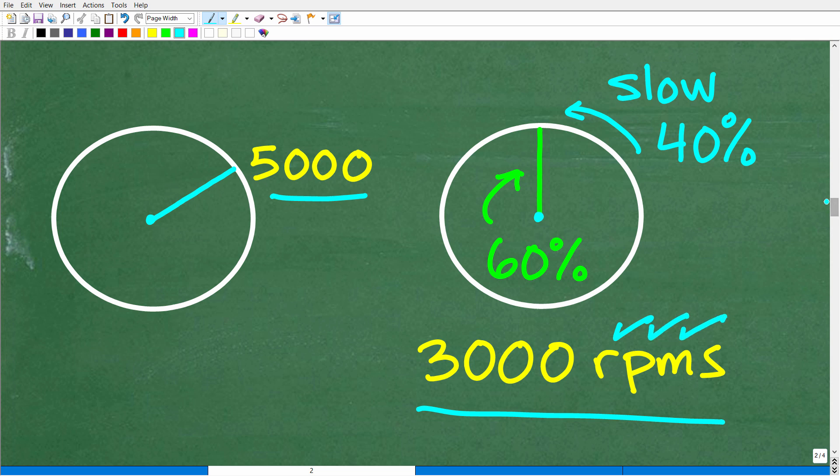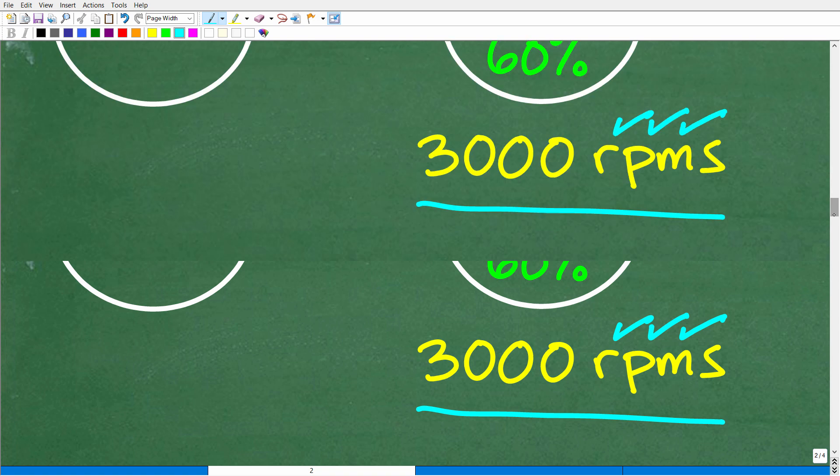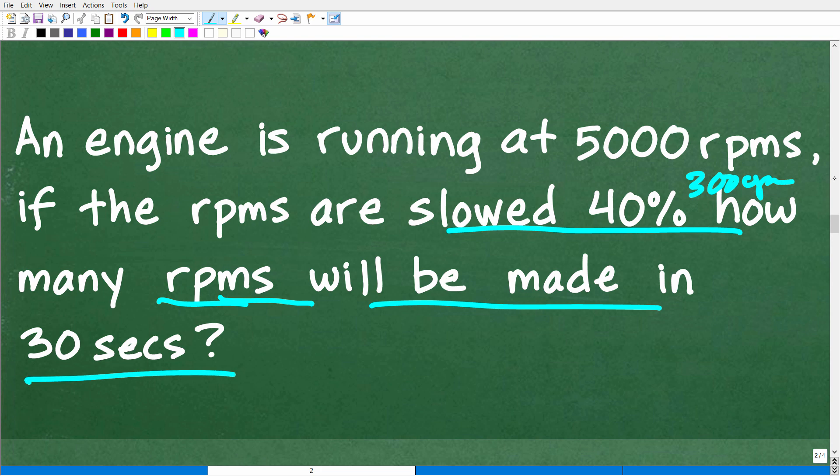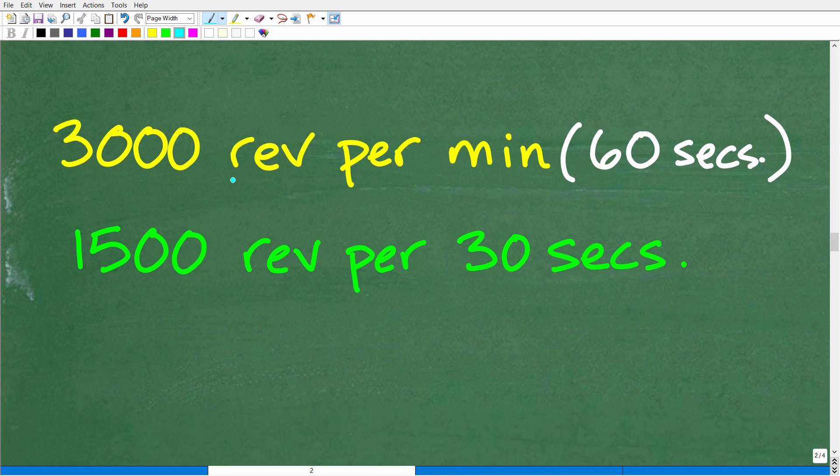Okay. So, that is really, for the most part, the information that we need to know in order to answer the question. So, let's revisit the question. An engine running at 5,000 RPMs. If the RPMs are slowed at 40%, i.e., now this engine is running at 3,000 RPMs, how many RPMs or revolutions, namely, will be made in 30 seconds? All right. So, an engine that is running at 3,000 RPMs or revolutions per minute, okay, we could state that as revolutions per 60 seconds, right? So, it's turning 3,000 revolutions per every 60 seconds or per one minute.